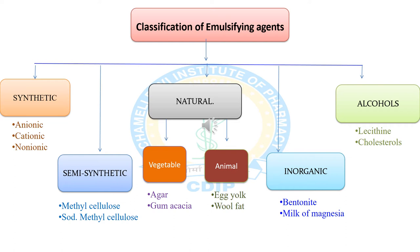Synthetic emulsifiers include anionic, cationic, and non-ionic surface active agents. Anionic surface active agents or surfactants are usually used for the preparation of external emulsions. A commonly used anionic emulsifier is sodium lauryl sulfate, which produces oil-in-water emulsion. For cationic type, quaternary ammonium compounds such as benzalkonium chloride and cetrimide are used as cationic emulsifying agents.